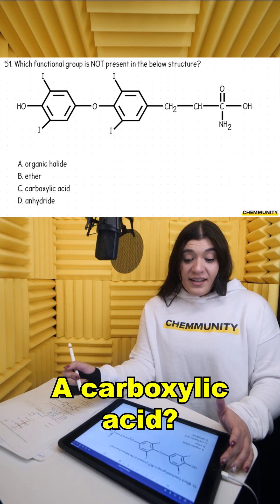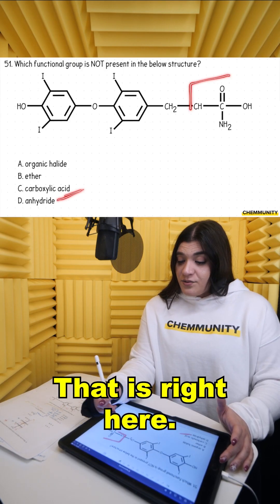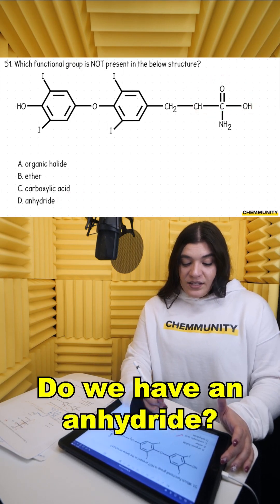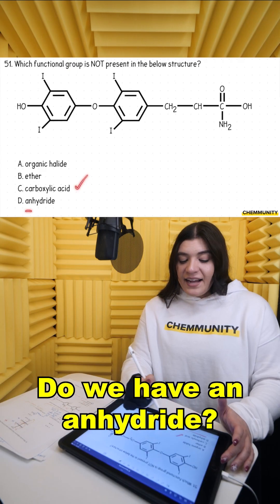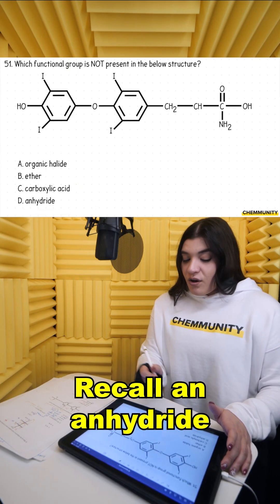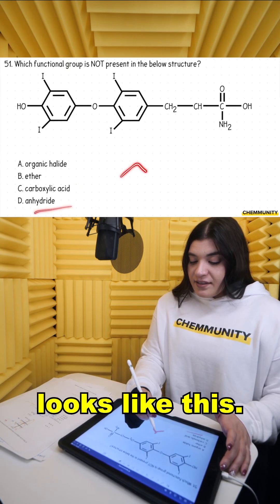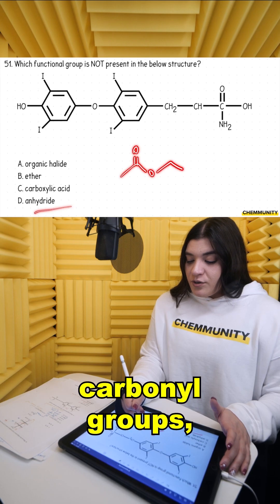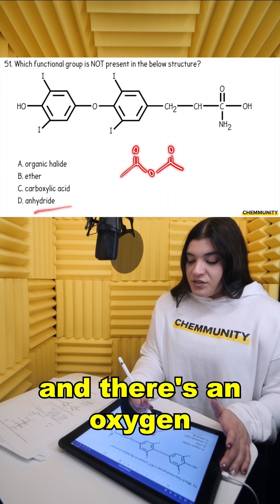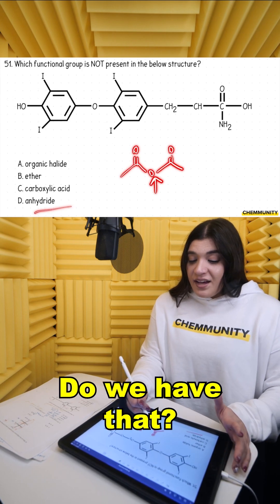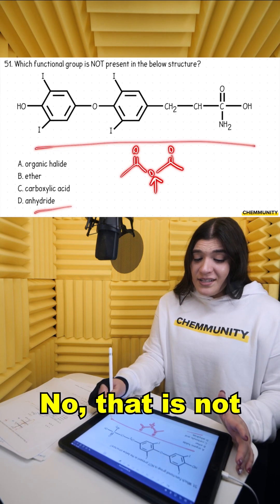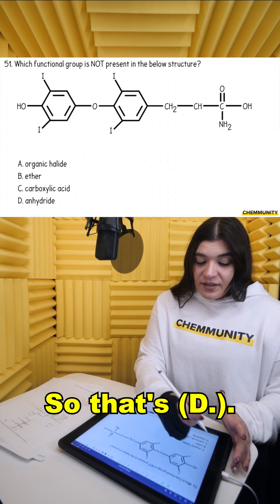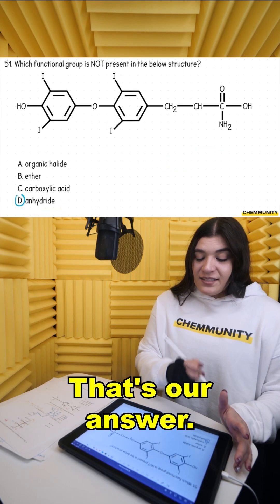A carboxylic acid. Yes, that is right here. Do we have an anhydride? Recall an anhydride looks like this — there are two carbonyl groups and there's an oxygen interrupting it. Do we have that? No, that is not in the structure. So that's D, that's our answer.